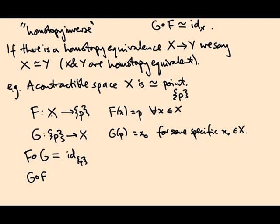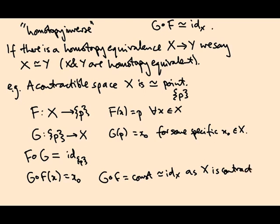In the other direction, if I start off at X, I map to p and then I include that point in X. Then this map is the constant map that sends everything to x_0. And a contractible space is one for which the constant map is homotopic to the identity map. So that means G compose F is constant, so it's homotopic to the identity map on X as X is contractible. So this proves that F and G are homotopy inverse to one another.